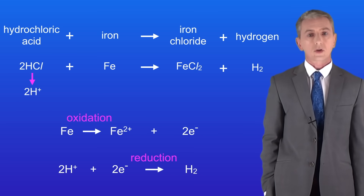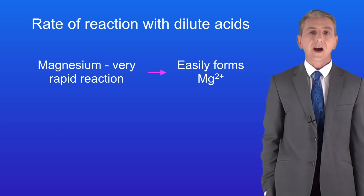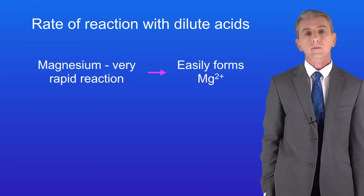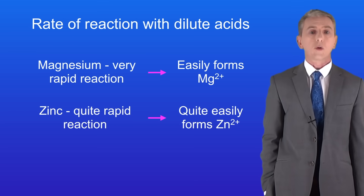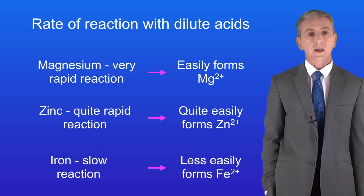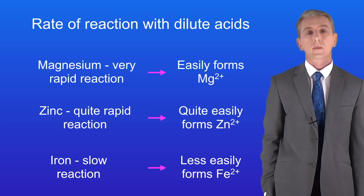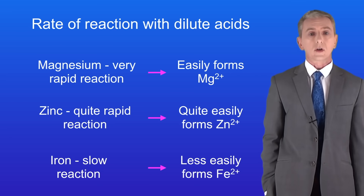We can use the idea of oxidation and reduction to explain the rate of reaction between metals and acids. Magnesium atoms react very rapidly with dilute acids because they very easily form the positive ion Mg²+. Zinc reacts quite rapidly with dilute acids because zinc atoms quite easily form the positive ion Zn²+. However, iron reacts slowly with dilute acids because iron atoms do not easily form the positive ion Fe²+. Remember, you'll find plenty more questions on the reactions of acids with metals and on oxidation and reduction in my revision workbook, which you can get by clicking on the link above.